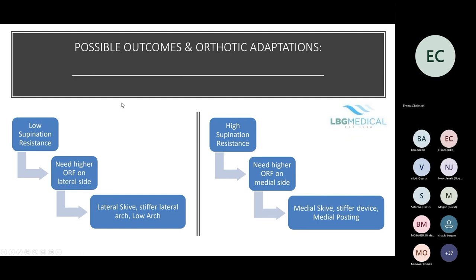For a low supination resistance force, you won't need high density along the medial side — instead you may want something stiffer on the lateral side; if it's very low, the patient may need lateral wedging and a stiffer lateral orthotic. For a high supination resistance, you're going to need more medial wedging and a stiffer device with medial skive and medial posting to generate enough force to achieve supination.